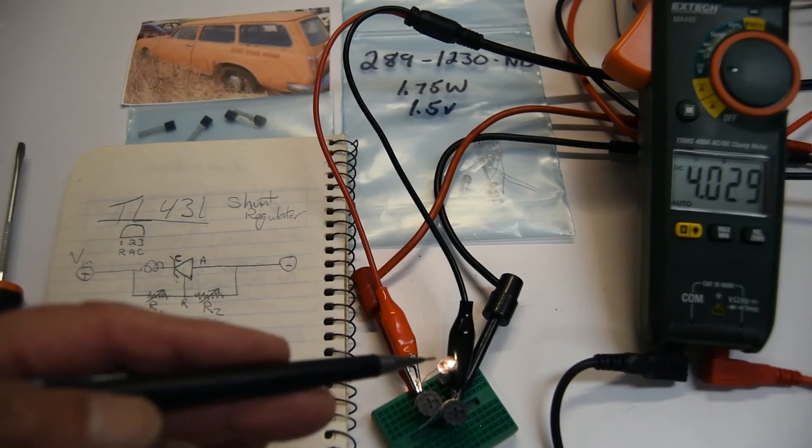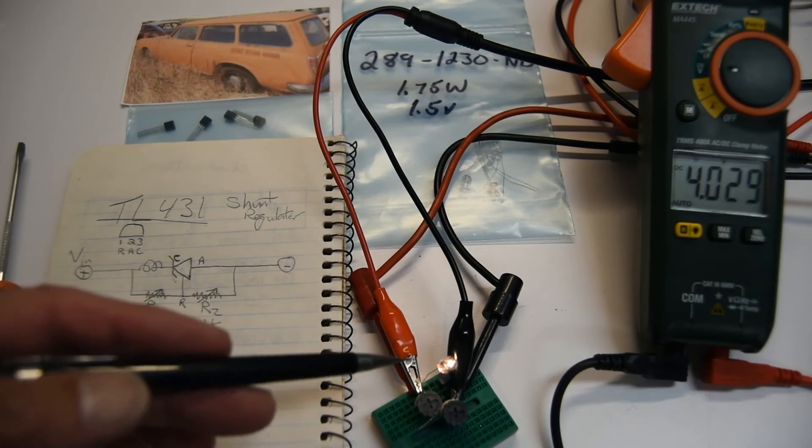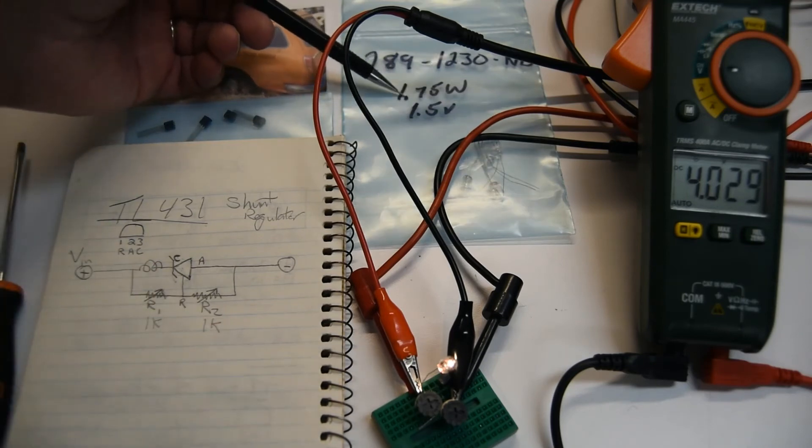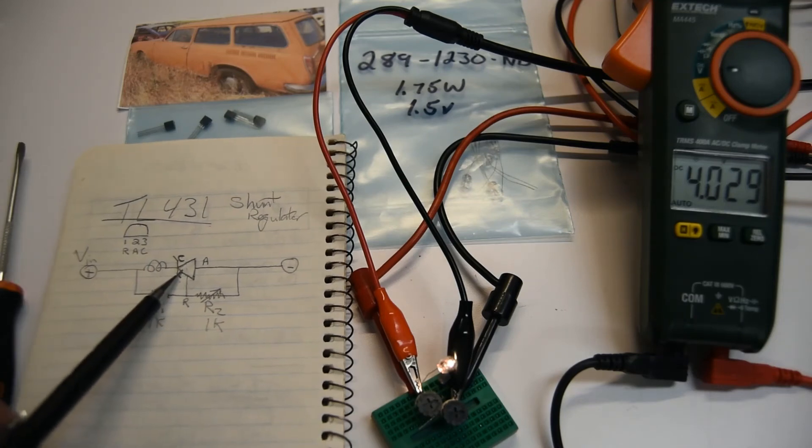You can see here the light bulb is rather dimly lit. This is actually a 1.75 watt bulb, 1.5 volts, so it'll pull more than an amp actually. But the regulator itself, the TL431, is limited to 100 milliamps.